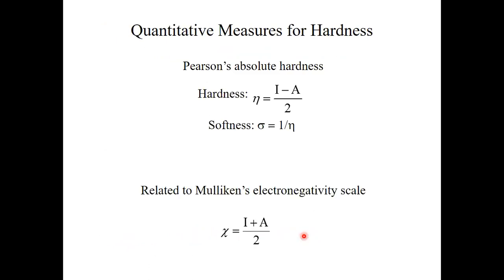Up to this point, we have determined the hardness and softness of species based on qualitative considerations. It would of course be very useful to also have a measure to really quantify hardness and softness by attaching a specific number. This we will discuss in the next class.